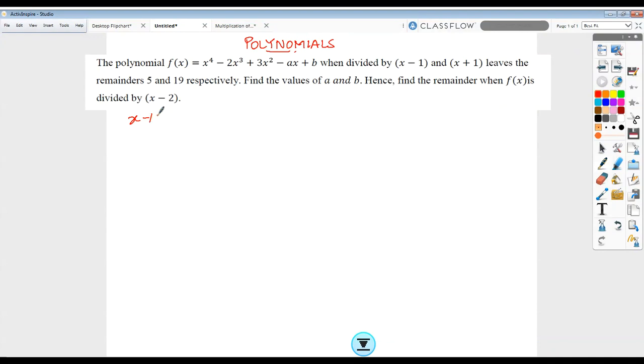We will take out the zero of one of the divisors first, and that zero happens to be 1. I'll substitute this zero in my given polynomial and get 1^4 as 1 minus 2 plus 3 minus a plus b. This remainder is given to me as 5. On simplifying the first equation, I can get b minus a equals 5 minus 1 plus 2 minus 3. So b minus a equals 3.